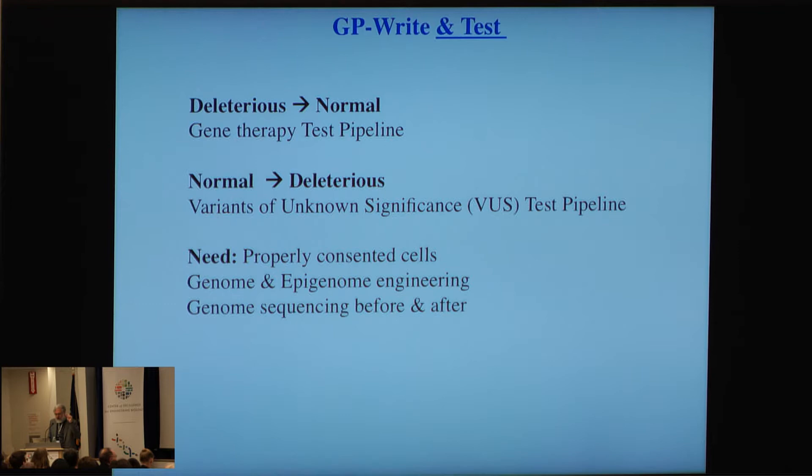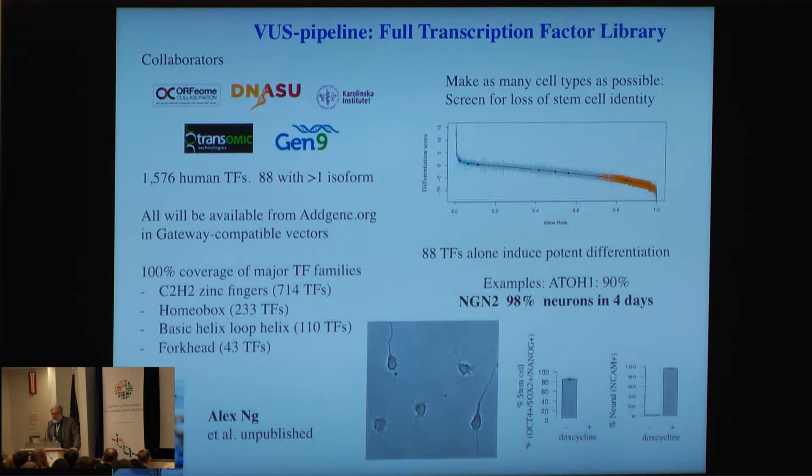Once you've made a genome, you want to sequence it. We constantly sequence the genomes we're engineering. We take it for granted that it's trivial to sequence a human genome — it's just something you check a box and it happens. This pipeline handles variants of unknown significance.